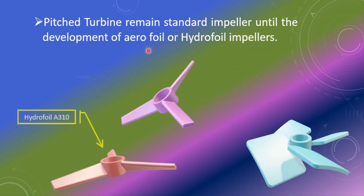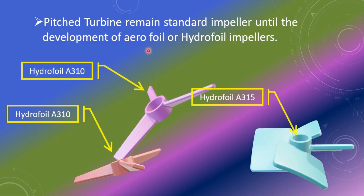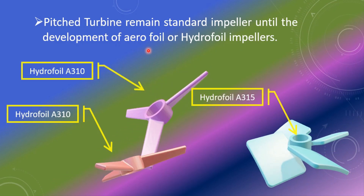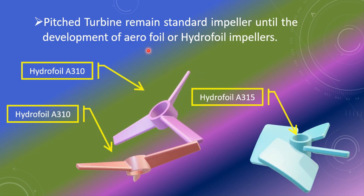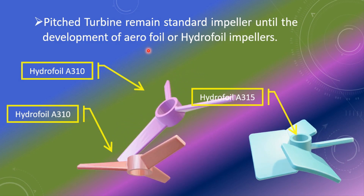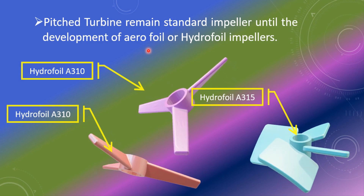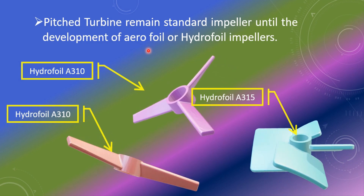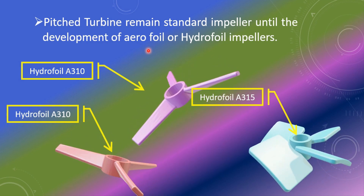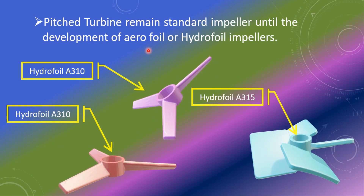The pitched blade turbine remained the standard impeller until the development of hydrofoil impellers. Here we can see two versions — the hydrofoil A310 and A315 — which are more energy efficient and process efficient impellers compared to the pitched blade turbine.